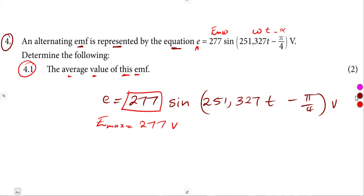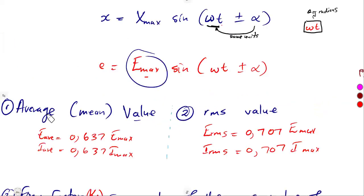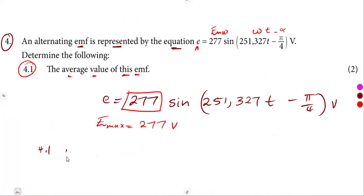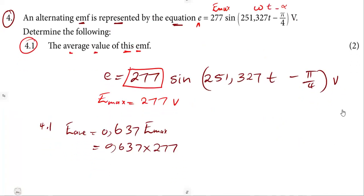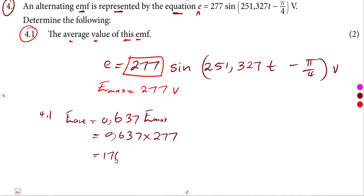With the maximum value, any other calculation can be determined — average value, RMS value from what we had before. Remember that our average value can be determined from this formula: average value is equal to 0.637 times the maximum value. So it is just substituting our values: 0.637 times 277 gives us an average value of 176.449 volts.